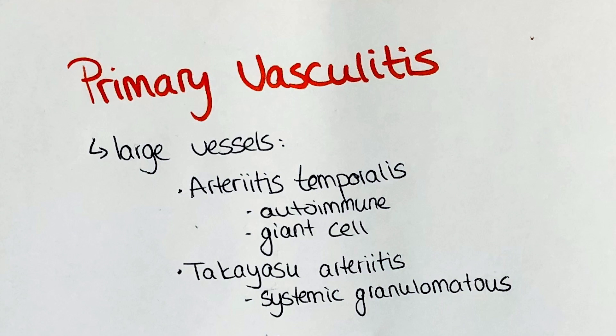The primary symptoms are rather general, such as fever, fatigue, myalgias, arthralgias and weight loss. With progression of the occlusion of the vessels, syncopes, a diminished pulse in the arteria brachialis, pain in the limbs, blood pressure differences between the arms, and other similar symptoms can also occur.